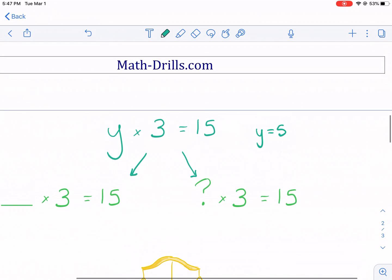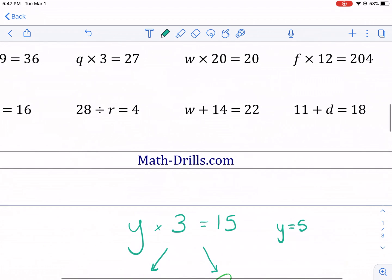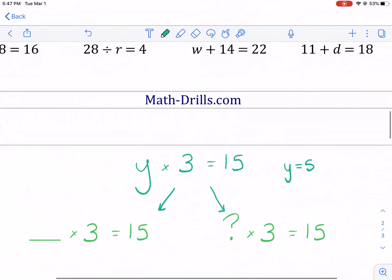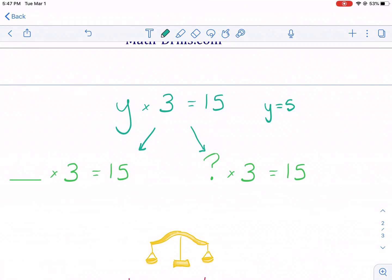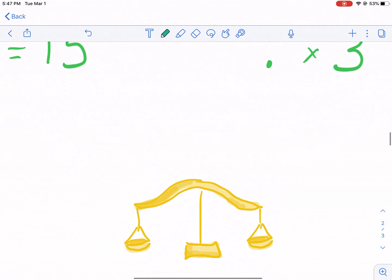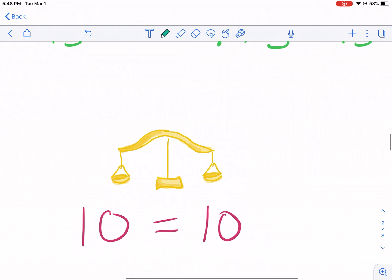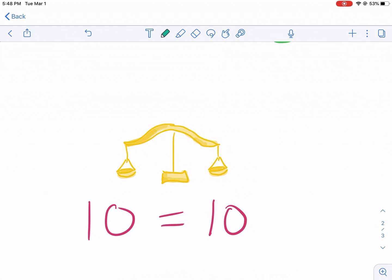Now the thing that we'll need help with understanding as we go through these problems, instead of just trying to do it in our head, is understand that equal signs and equations are like a scale. What you do to one side affects the other side. It has to be balanced for it to be equal. So let's take 10 equals 10. Obviously, that's a true statement. That's what equations do. They make true statements.